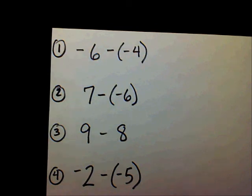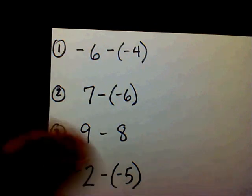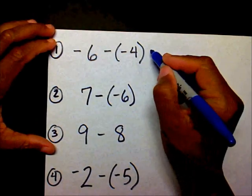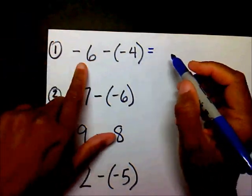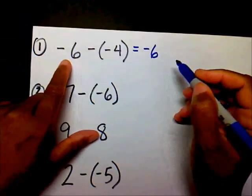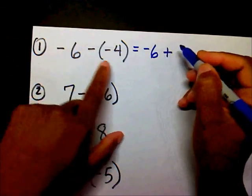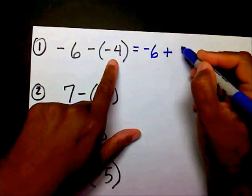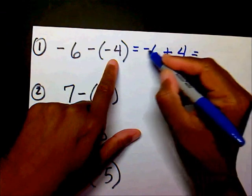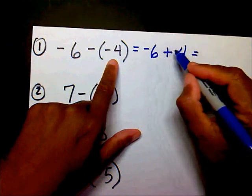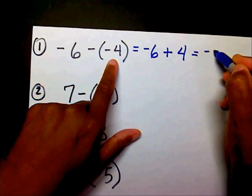Okay, welcome back. We have negative 6. You want to add the opposite of negative 4 is positive 4. So my answer is going to be negative 6 plus 4, which is negative 2.